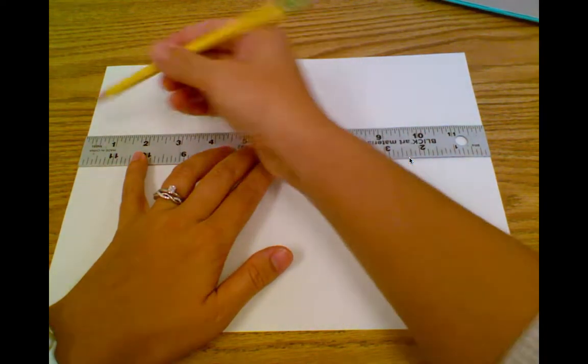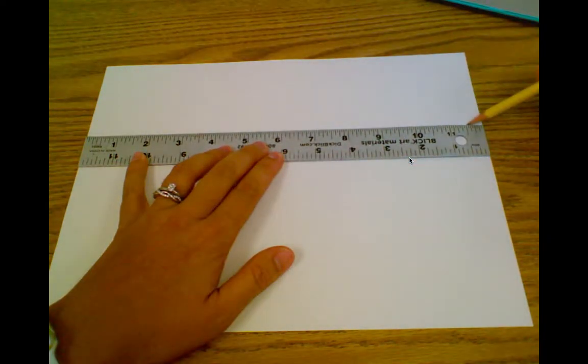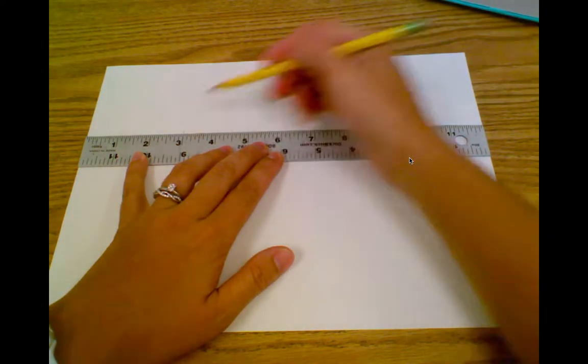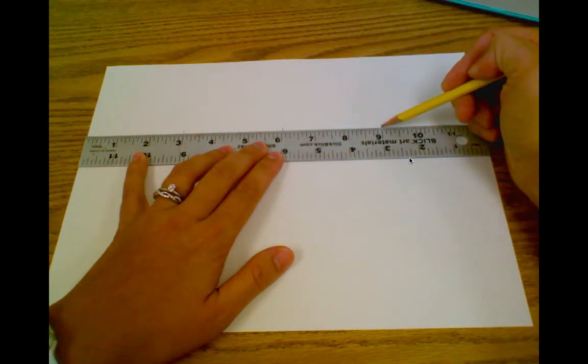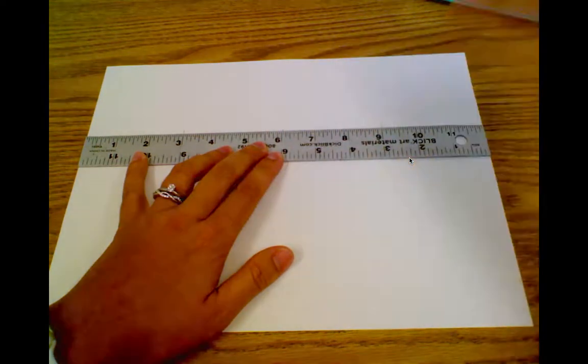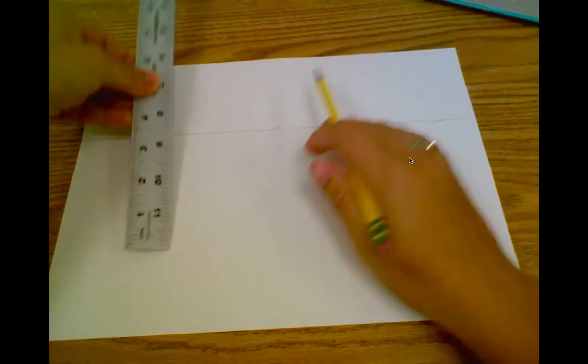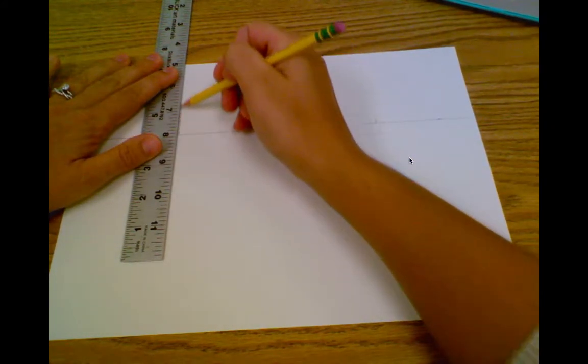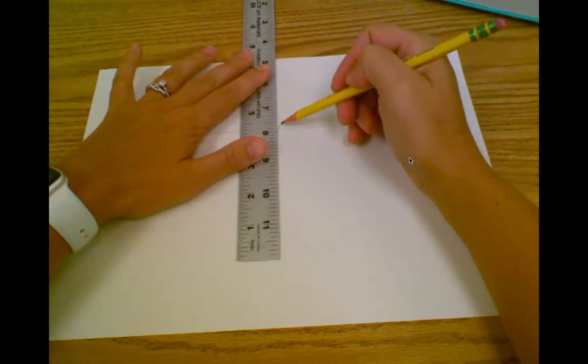That paper is 12 inches long. I'm going to put a tally mark at the three, at the six, and at the nine. That's going to give me four three by three inch sections, and then I draw my lines straight up and down for my sides.